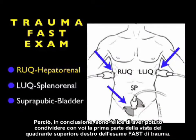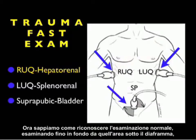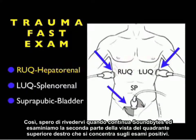So in conclusion, I'm glad I could share with you part one of the right upper quadrant view of the trauma fast exam. Now we know how to recognize a normal examination looking all the way from the area below the diaphragm through Morrison's pouch and terminating at a view of the caudal tip of the liver. So I hope to see you back as SoundBytes continues and we look at part two of the right upper quadrant view focusing on positive examinations.